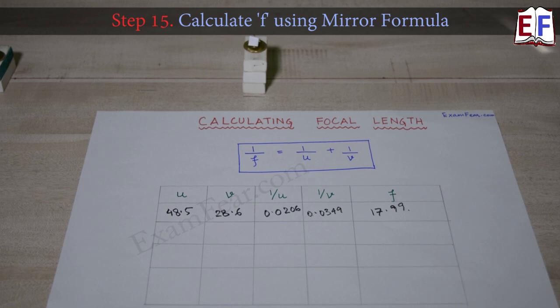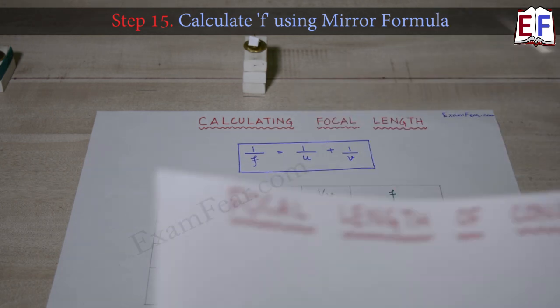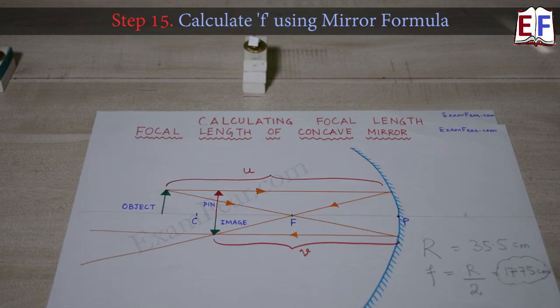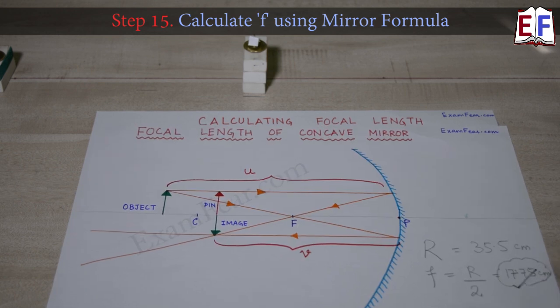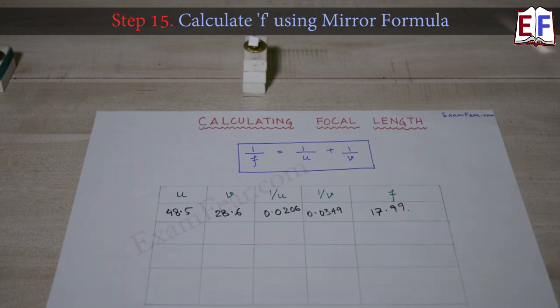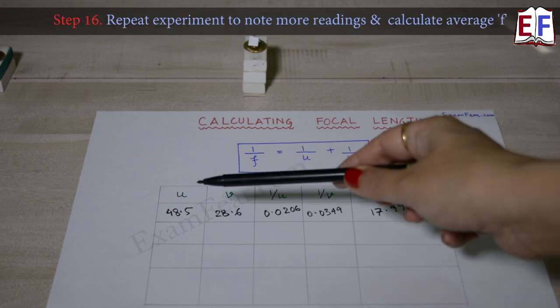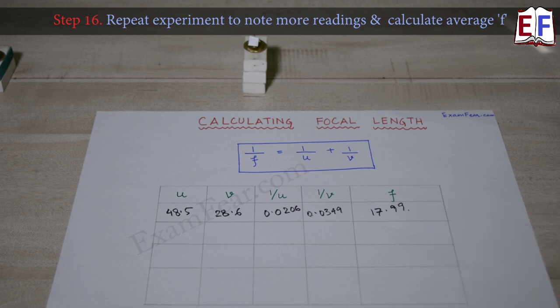Comparing this with our earlier estimated value of approximately 17.75 centimeters, both values are comparable. To get accurate results, you should repeat the entire experiment to obtain multiple sets of readings — at least three to four sets — calculate u, v, and f for each, and then take the average value of f to get the exact focal length of the concave mirror.